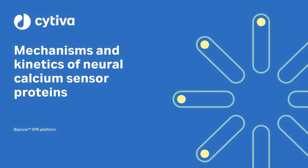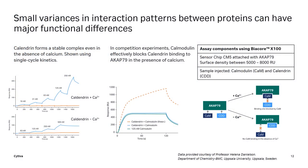In the next application example, we will learn how one can study mechanisms and kinetics of neural calcium sensor proteins. In the featured study by the group of Helena Danielsson at Uppsala University in Sweden, the interactions between calmodulin and calendrin with AKAp79 respectively were studied using SPR. The group also looked at the influence of calcium ions on these interactions. AKAp79 belongs to A-kinase anchoring proteins involved in the organization and precision of intracellular signaling events.